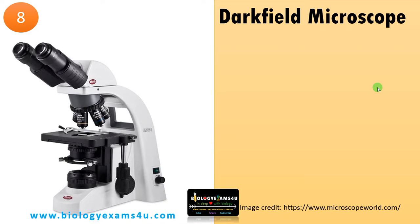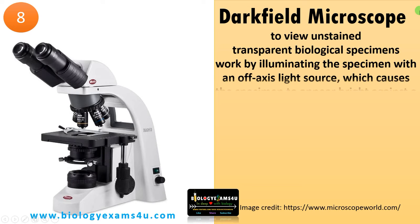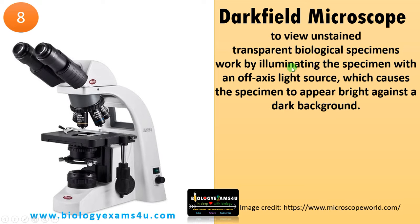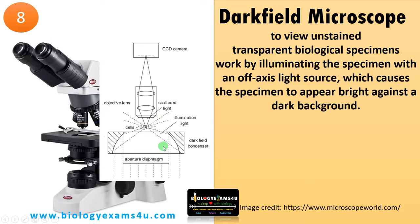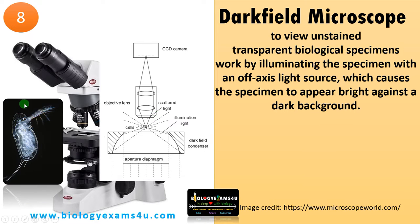Number eight in the list is the dark field microscope. As the name suggests, it is a special type of microscope designed to see unstained, transparent biological specimens. Light illuminates the specimen at an oblique angle, which causes the specimen to appear bright against a dark background — making it well suited to see transparent specimens.